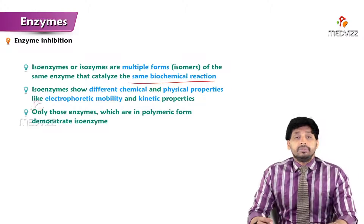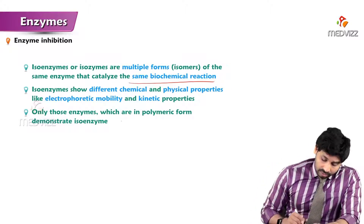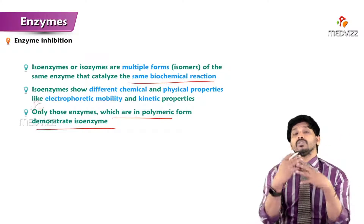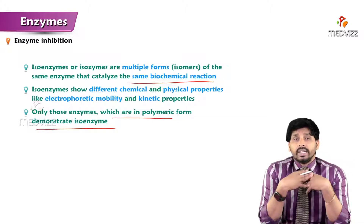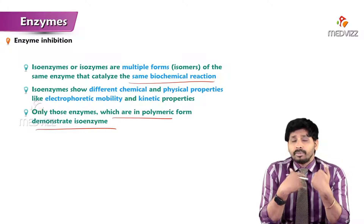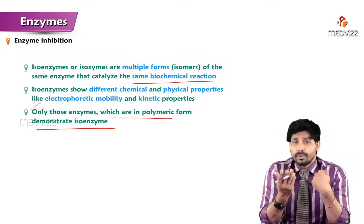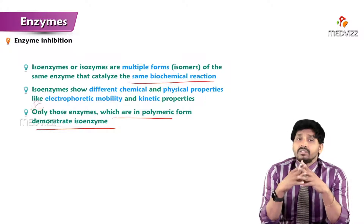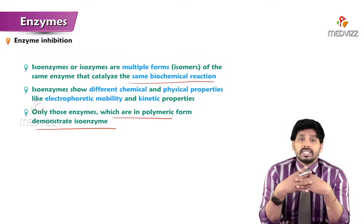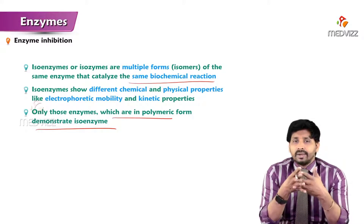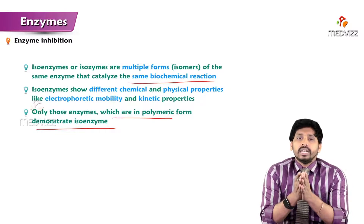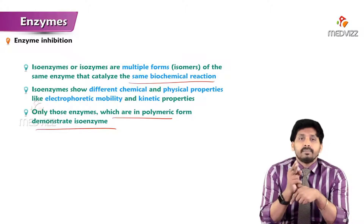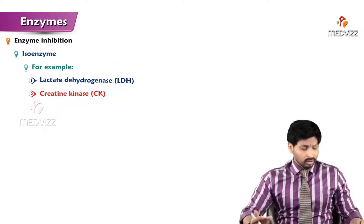Isoenzymes catalyze the same biochemical reaction, and only enzymes in polymeric form demonstrate isoenzymes. Think of it like coins - a one rupee coin and a ten rupee coin have different designs but different values. Similarly, isoenzymes are physically and chemically different but functionally the same - they catalyze the same biochemical reaction.